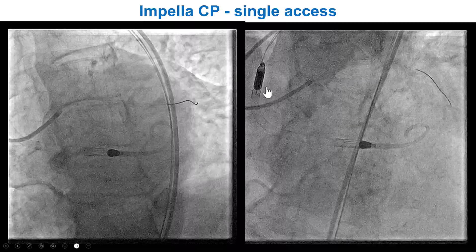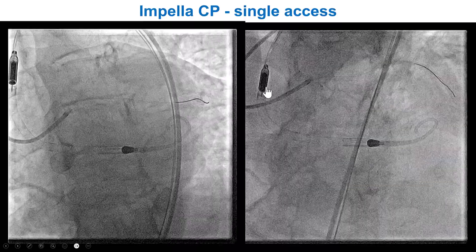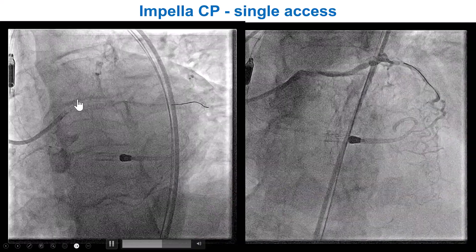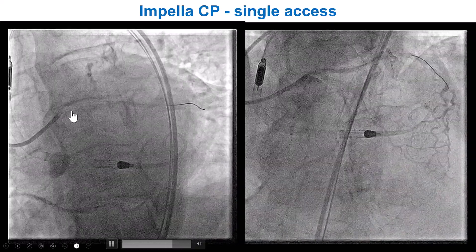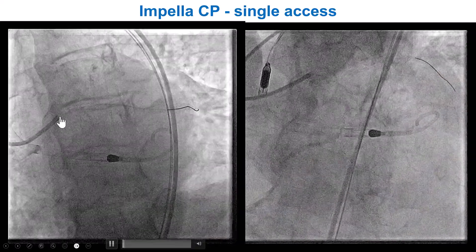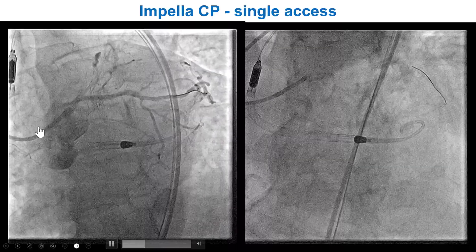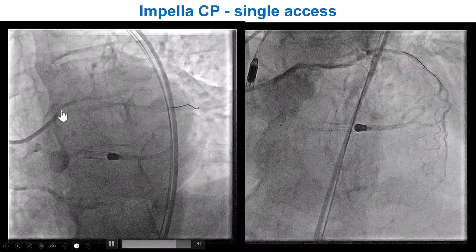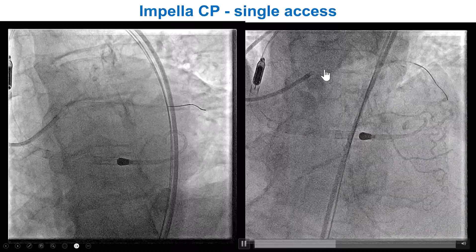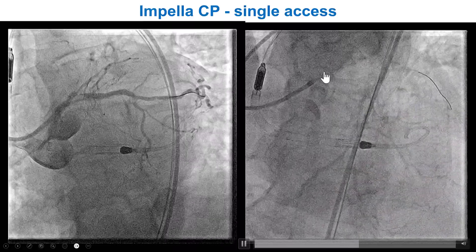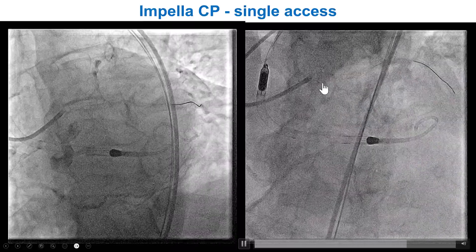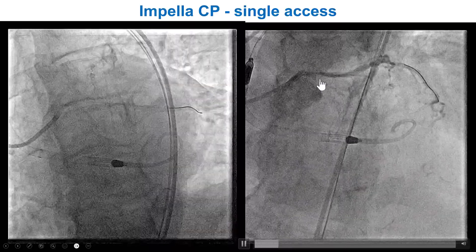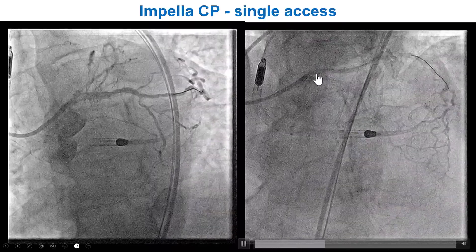Because we were going to intervene through the last remaining vessel, we decided to use hemodynamic support with an Impella CP device. We placed a 7-French sheath through the Impella sheath and engaged the left main with an EBU 3.75 7-French guide. We wired the circumflex and did multiple projections trying to clarify the location of the proximal cap of the LAD CTO.